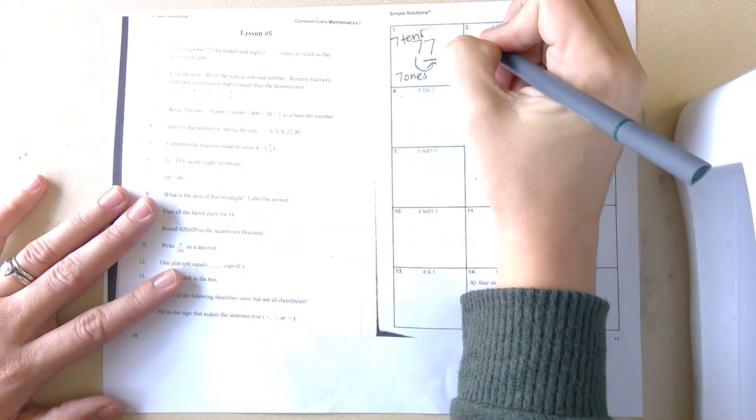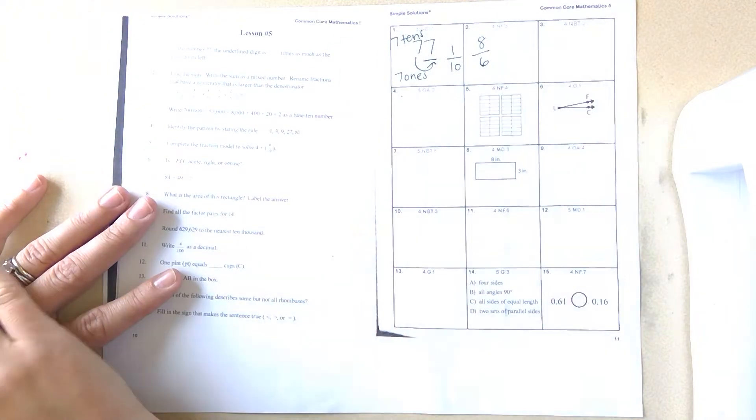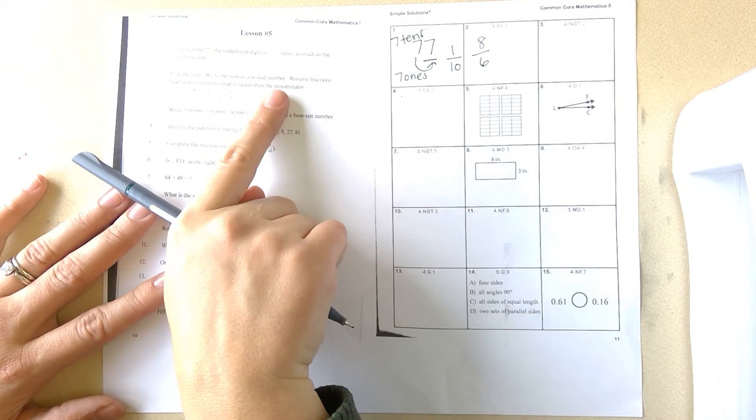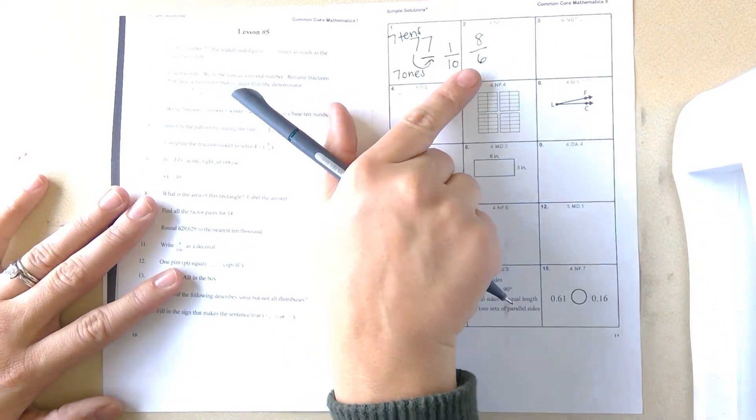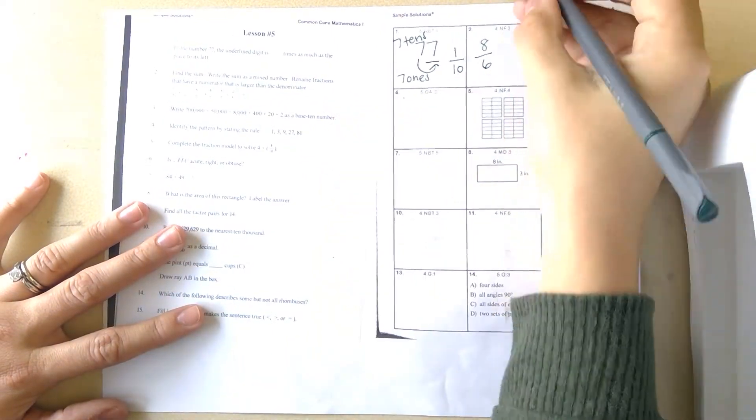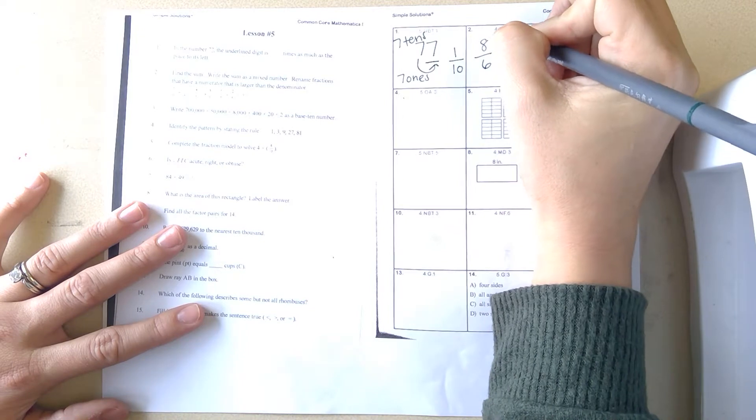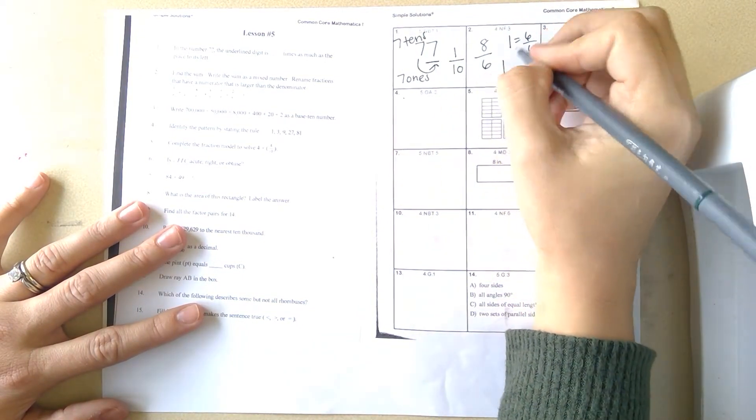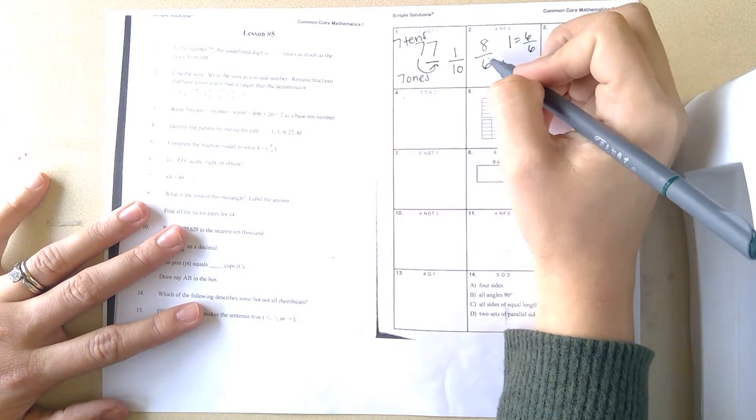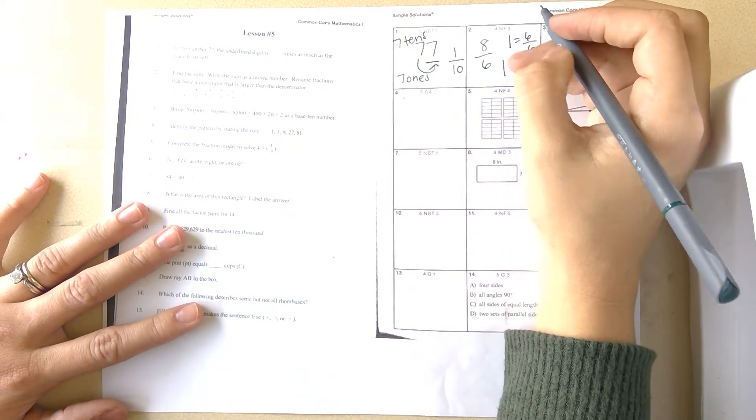What's another way to do eight-sixths as a mixed number? A mixed number is when you can pull out a whole. How much would be a whole if six is your denominator? One whole would equal six-sixths. We would have one whole, and then if I took out that six-sixths from the eight-sixths, it would leave me with two-sixths.